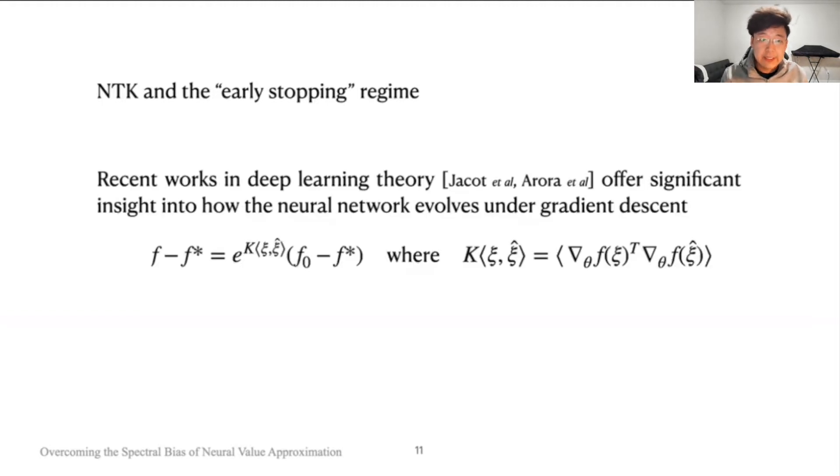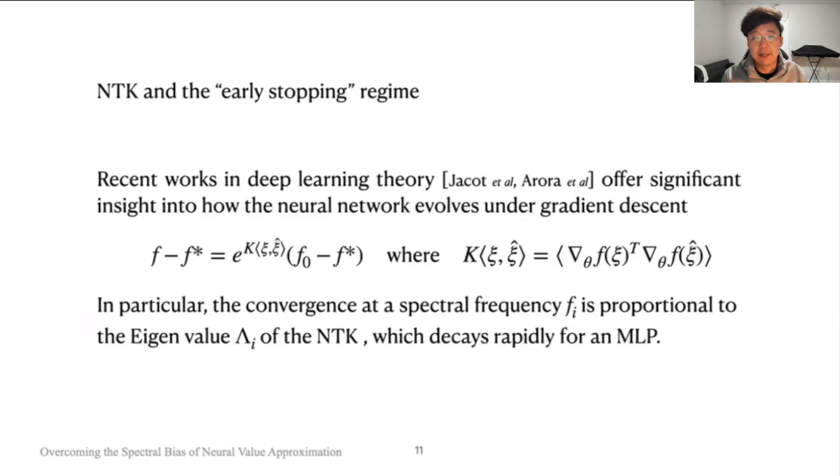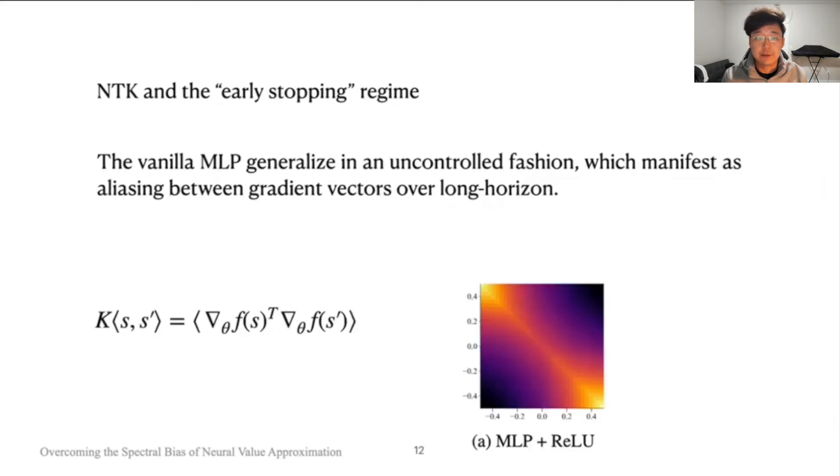Recent work in deep learning theory offers significant insight into how the neural network evolves under gradient descent. In particular, this uncovers a spectral bias where the convergence at a spectral frequency f is proportional to the eigenvalue of the neural tangent kernel, which decays rapidly for multilayer perceptrons.